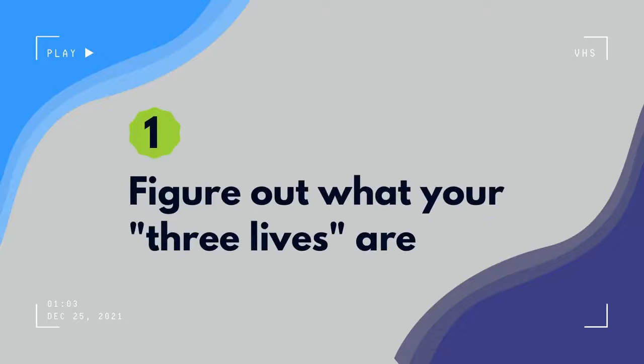The first thing you want to do is figure out what your three lives are. These can be your job, your hobbies, or just whatever you spend a lot of your time doing. If you're a parent, that can be one of them, or if you spend a ton of time binging Netflix, that can be one. There are no rules here. A lot of creators have put a really funny twist on this trend by saying one of their three lives is a tired person.